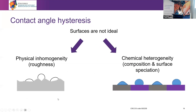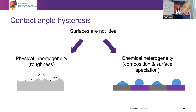Now I'm going to talk about contact angle hysteresis. Surfaces are not ideal — they can be chemically heterogeneous, which is especially the case for poorly liberated particles. They can also have roughness on the surfaces. These two characteristics will interfere with the contact angle. Mineral surfaces have both of these properties, and they are also reactive, which makes the study even more complex.